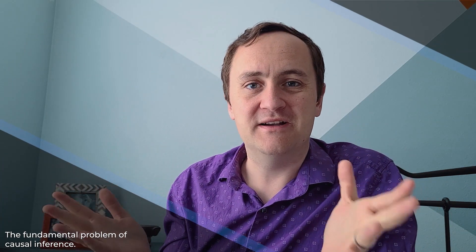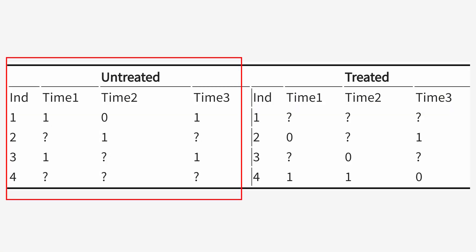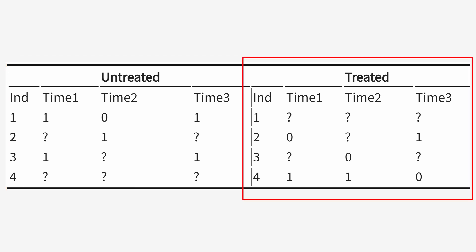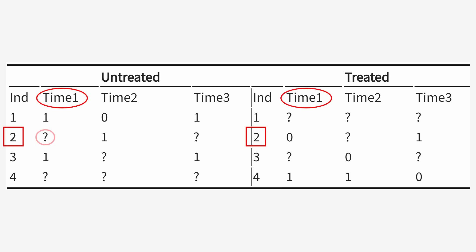What matrix completion does is say: we have a lot of data — why don't we just try to calculate what we think your counterfactual would have been? It takes two matrices of data: one of just the outcome data for people who are not currently being treated (the untreated matrix), and one for people who are currently being treated (the treated matrix). There are a lot of question marks in these matrices — those are the points where we did not observe something. For example, individual two in time period one has a question mark in the untreated matrix but a zero in the treated matrix, meaning person two was treated in time period one and we don't know what their outcome would have been if untreated. Matrix completion just says: let's fill in the question marks on the untreated matrix, and then we have something to compare our treated data to.